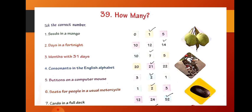Now, consonants in the English alphabet. So, options are 20, 21 and 22. There are five vowels in English alphabet. That is, A, E, I, O, U. And the rest all are consonants.